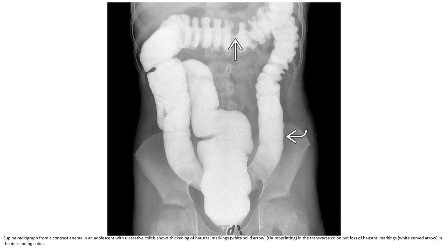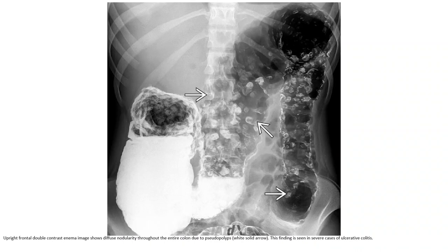Radiographs from a contrast enema in an adolescent with ulcerative colitis show thumbprinting in the transverse colon, but loss of haustral markings in the descending colon. The upright frontal double contrast enema image shows diffuse nodularity throughout the entire colon due to pseudopolyps. This finding is seen in severe cases of ulcerative colitis.